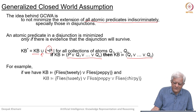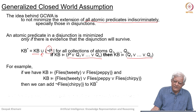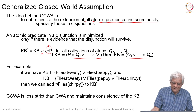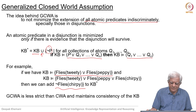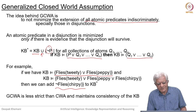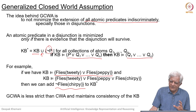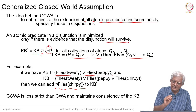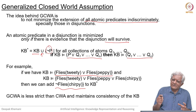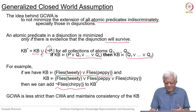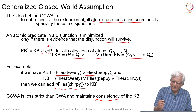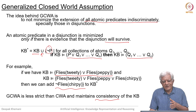For example, if our knowledge base says 'Tweety or Pepe can fly' and also 'Tweety or Pepe or Chirpy can fly,' then we can add 'not flies(Chirpy)' because we know that one of Tweety and Pepe can fly, so the disjunction will not become false. This is what is meant by the disjunction surviving. Generalized closed world assumption is less strict than closed world assumption — it does not add 'not p' for every atomic predicate it cannot show to be true; instead it tries to maintain consistency by not adding 'not p' and 'not q' simultaneously when 'p or q' is in the knowledge base.